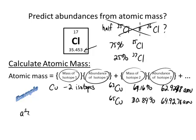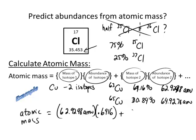So the atomic mass for copper equals 62.9298 amu times its abundance, which will be written as a decimal, 0.6916. And then add to that the mass of the second isotope, 64.9278 amu, and multiply that by its abundance, which is 0.3084.